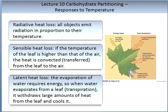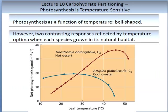In the cytosol of the chloroplast, starch is produced. It can be broken down into glucose or maltose, and further broken down into sucrose, which can again be moved into the vascular tissues. The relationship of photosynthesis as a function of temperature is described as a bell shape, shown for C3 and C4 plants. Two contrasting responses are reflected by temperature optimum when each species is grown in its own habitat. For example, a hot desert C4 plant is more optimal at just over 40 degrees, compared to a cool coastal C3 plant.